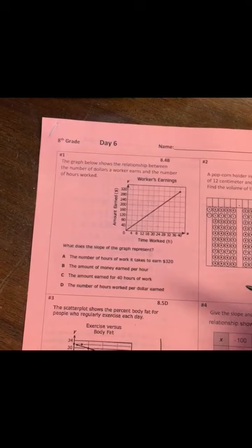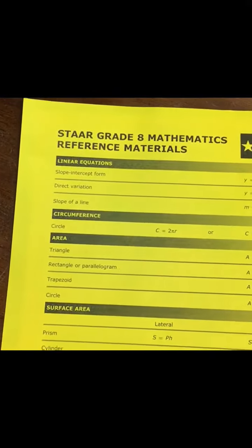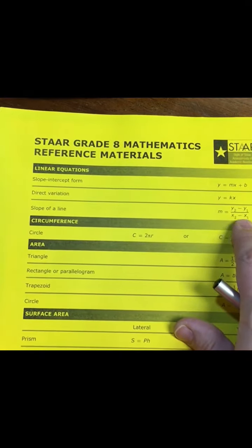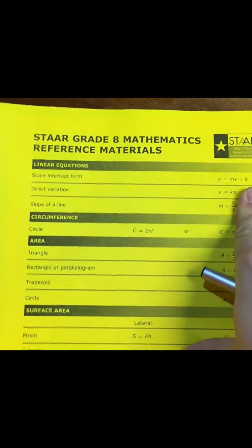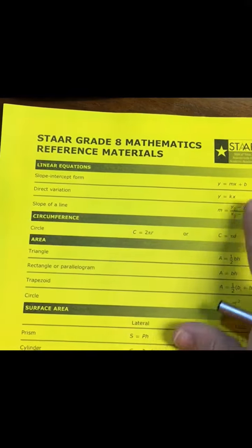And these answer choices basically are just asking you for the words. Okay, so on your reference material, slope of the line, and if you'll just look right here it's gonna help you remember that y goes on top of x. I know that's kind of confusing, but slope of line, cover up the confusing part, y goes over x.